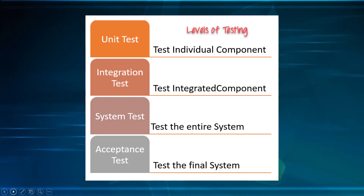Under user acceptance testing there are two types: alpha and beta testing, done by end users. System testing is done by software testers and comes under black box testing, because you can't see the code. UAT is the final stage — when end users test the entire software to see if it's working as expected, after all our testing is complete.